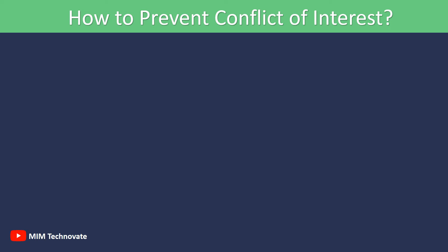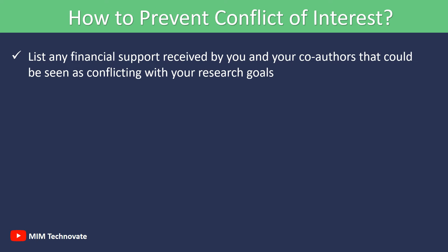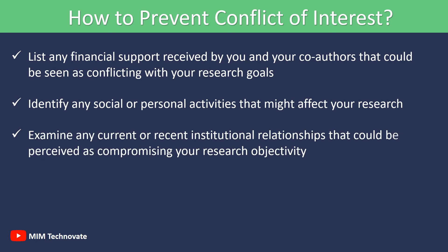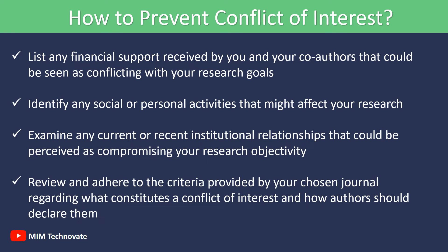How to Prevent Conflict of Interest. List any financial support received by you and your co-authors that could be seen as conflicting with your research goals. Identify any social or personal activities that might affect your research. Examine any current or recent institutional relationships that could be perceived as compromising your research objectively. Review the criteria provided by your chosen journal regarding what constitutes a conflict of interest and how authors should declare them. By proactively addressing conflicts of interest, researchers can maintain the integrity and credibility of their work.